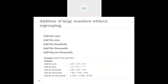The example was 51,324 plus 33,451. First we arranged them in vertical columns. We added the ones: four plus one is five. Tens: two plus five is seven. Hundreds: three plus four is seven. Thousands: one plus three is four. Ten thousands: five plus three is eight. So the answer is 84,775.